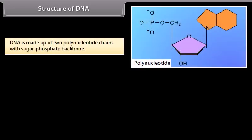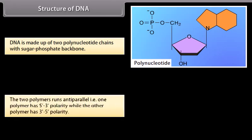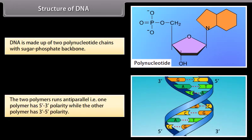DNA is made up of two polynucleotide chains with a sugar phosphate backbone. The two polymers run anti-parallel — that is, one polymer has 5-prime to 3-prime polarity, while the other polymer has 3-prime to 5-prime polarity.